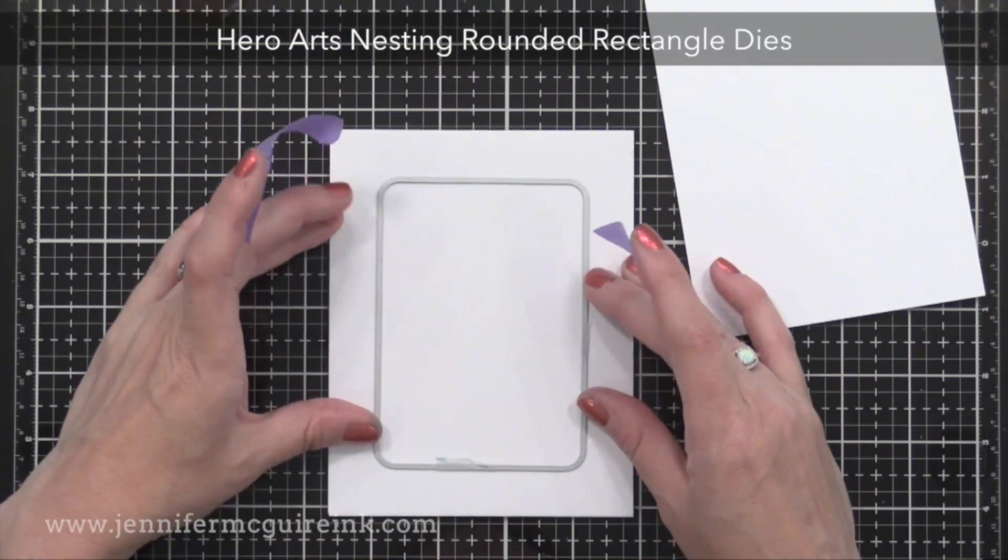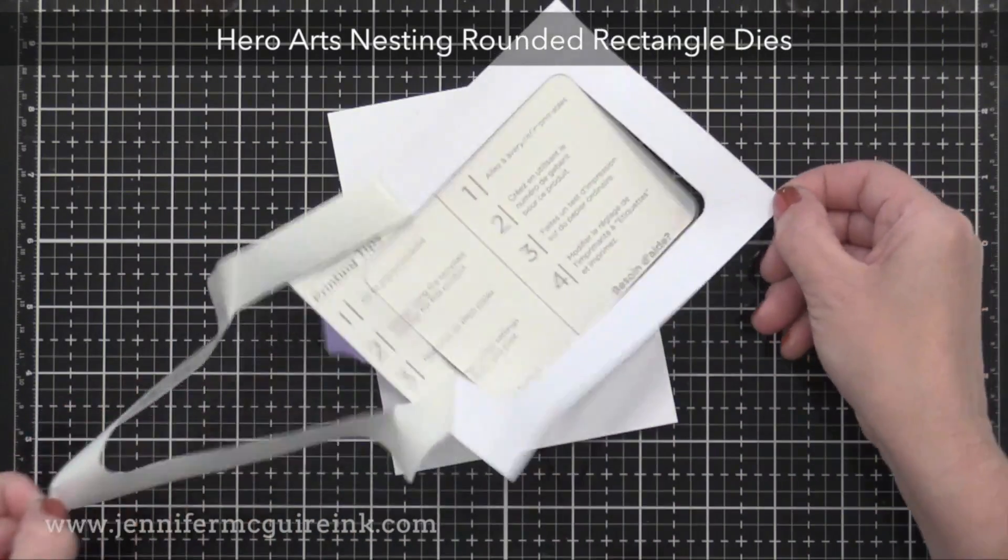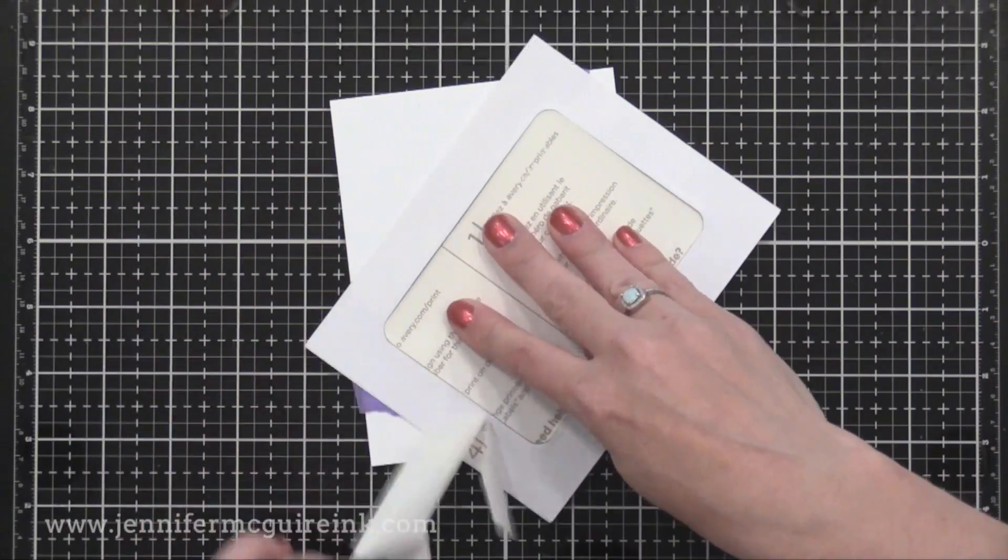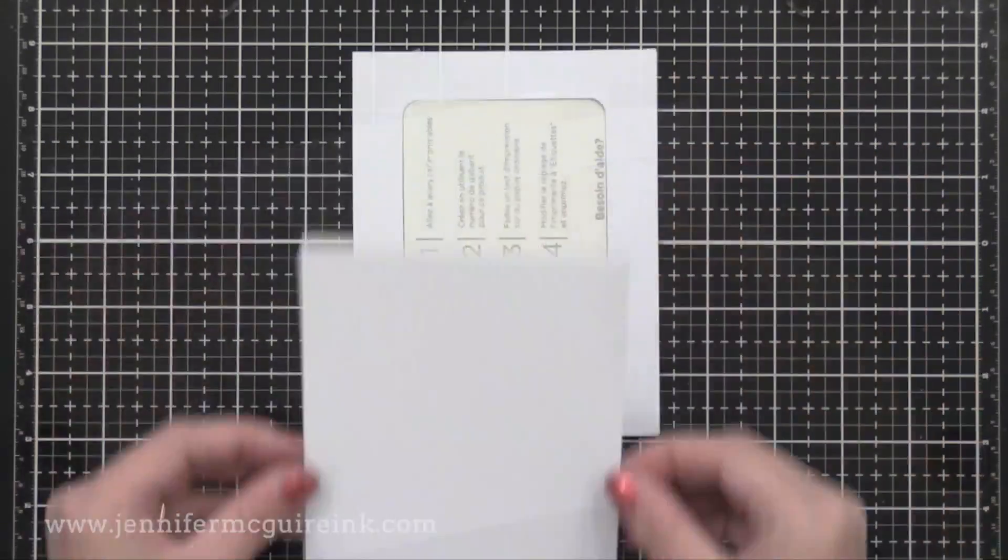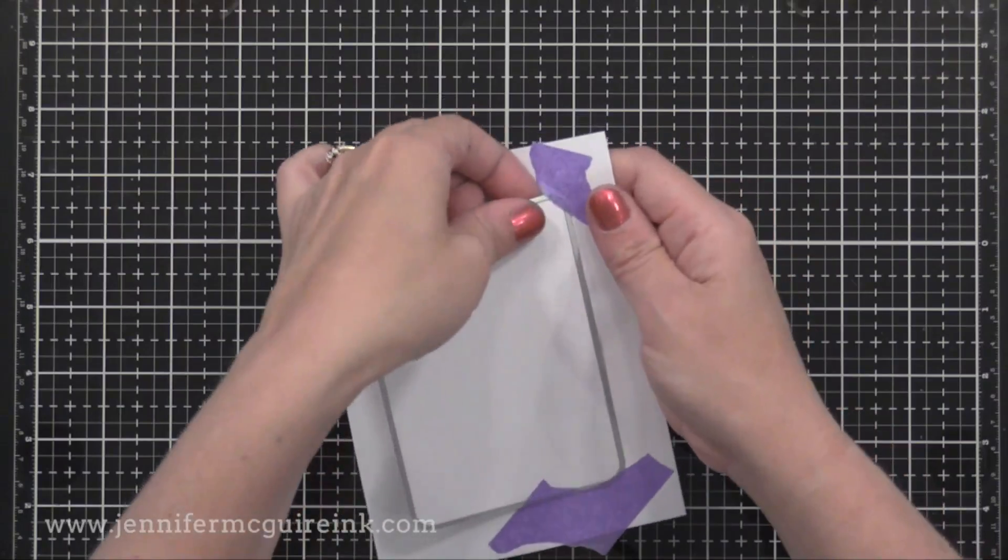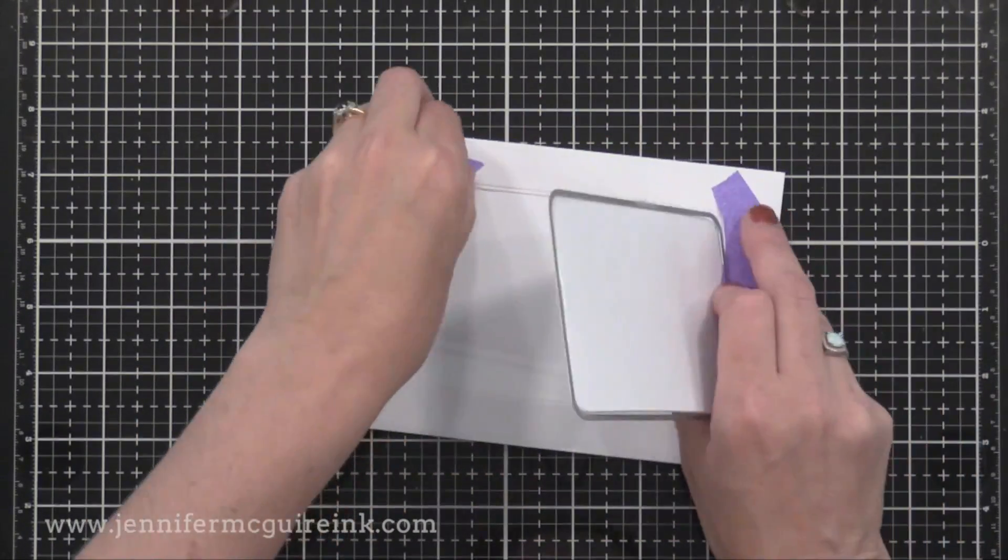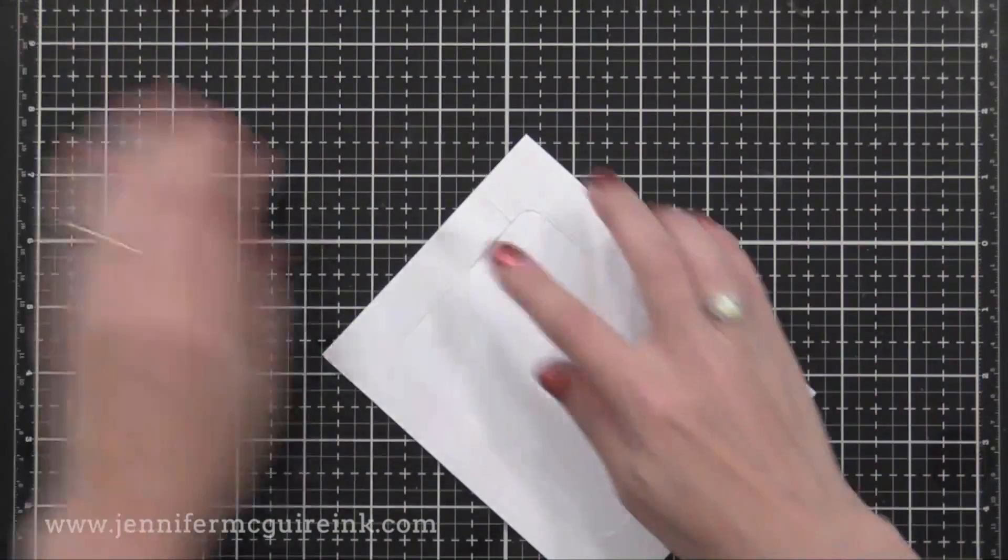I'm using this Hero Arts nesting rounded rectangle die, taping it right to the center and running it through my die cut machine. Now I have a frame made of masking paper and it's doubled up. Next, I'll apply this to a piece of white card stock that's four and a quarter by five and a half. And we have that opening centered right on that card stock.